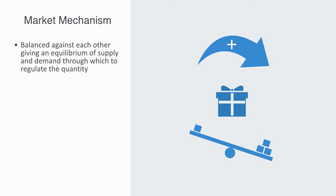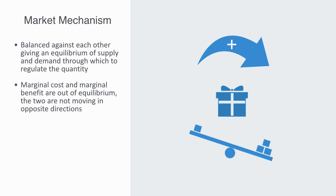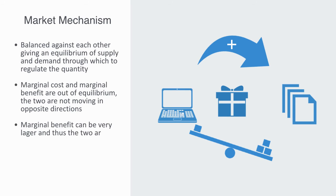The market mechanism breaks down when we have both positive or negative externalities, because marginal cost and marginal benefit are out of equilibrium. The two are not moving in the opposite direction, or there is a weak correlation between them. As for example might be the case with digital products, where the marginal cost of producing one more copy is very small, and the marginal benefit can be very large, and thus the two are not directly correlated.